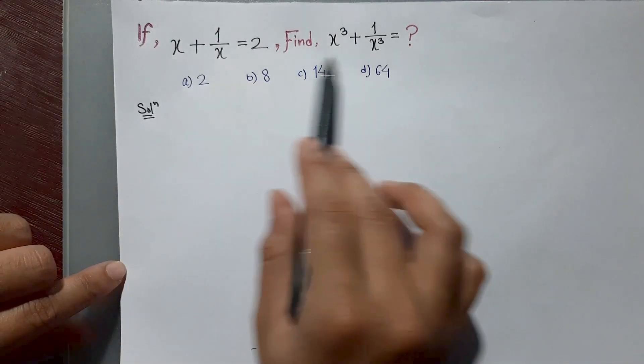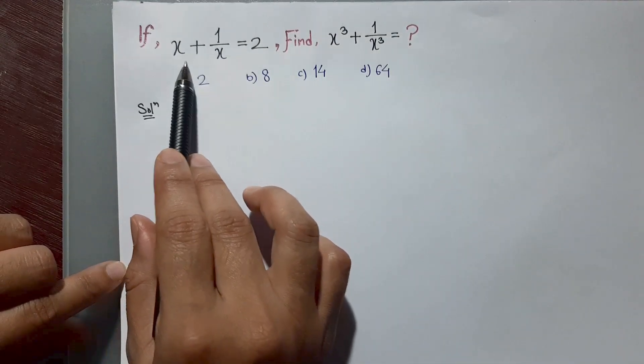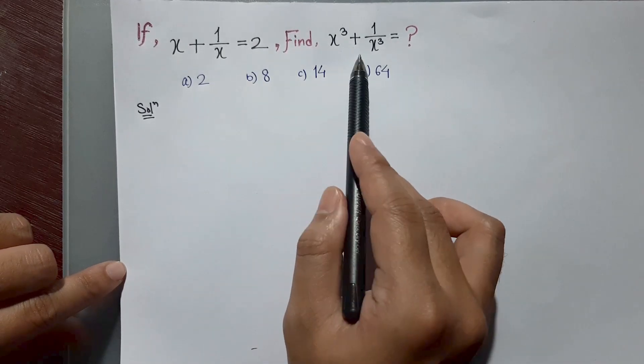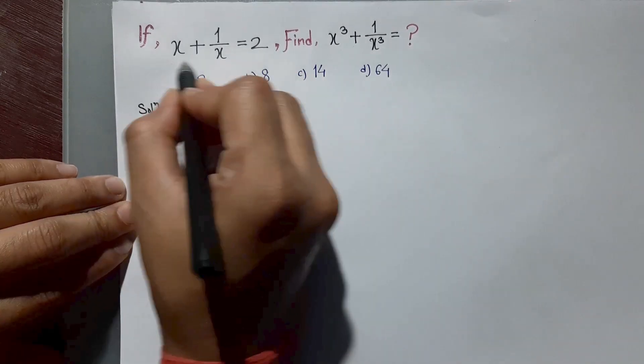Hello guys, welcome to my channel. Let's solve this algebraic problem. Given: if x plus 1 by x is equal to 2, we need to find the value of x cube plus 1 by x cube. Let's first write the given equation.